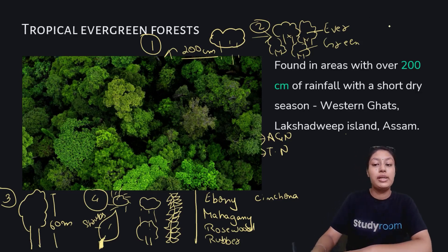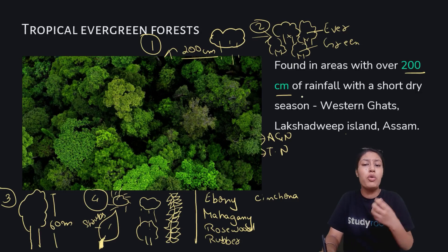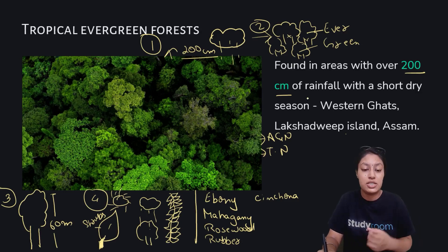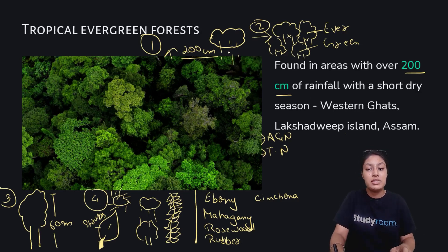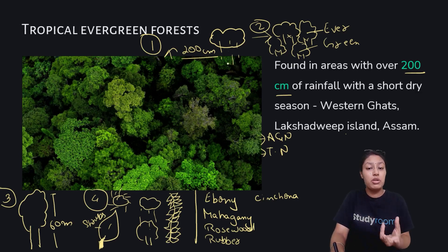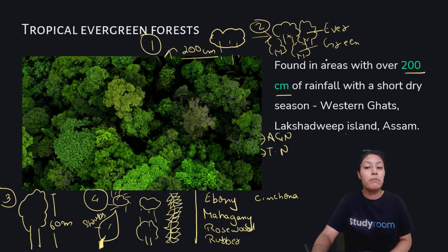The rainfall in tropical evergreen forests is over 200 centimeters, and they have both dry seasons and wet seasons. It has heavy precipitation, meaning the rainfall is very, very high. The trees are getting water all the time, which is why trees grow so well there.